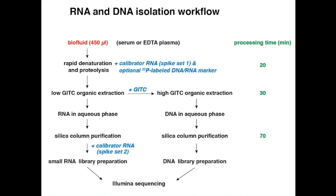If you want to recover DNA, you take the retained organic phase, add more guanidinium isothiocyanate, which then pushes the DNA into the aqueous phase, and apply the same purification protocol. With the exception of the rapid denaturation step, everything is done on a liquid handling robotic system with 96-well plates. For denaturation, you use a multi-channel pipette so that you can mix your samples effectively with the denaturant.